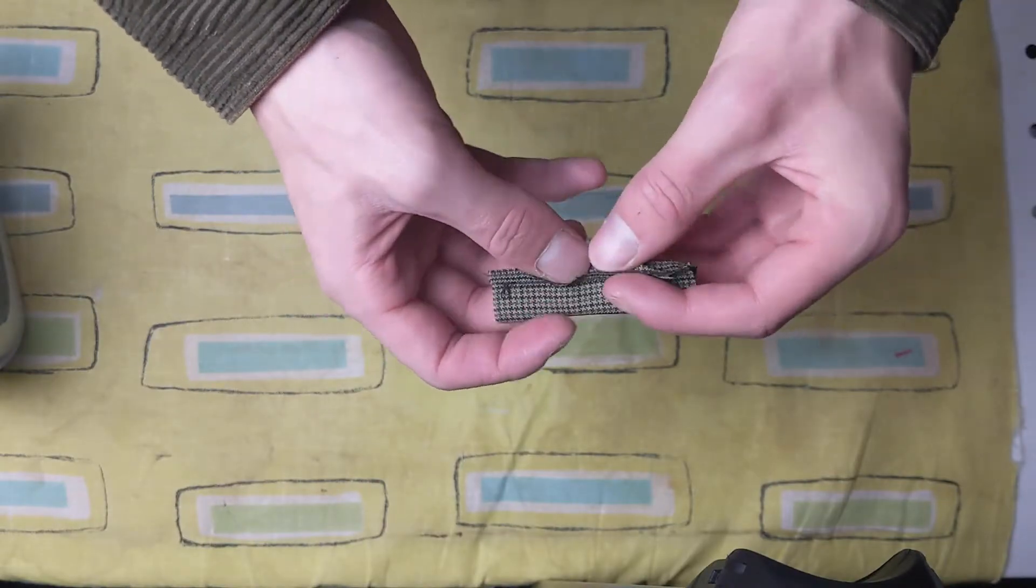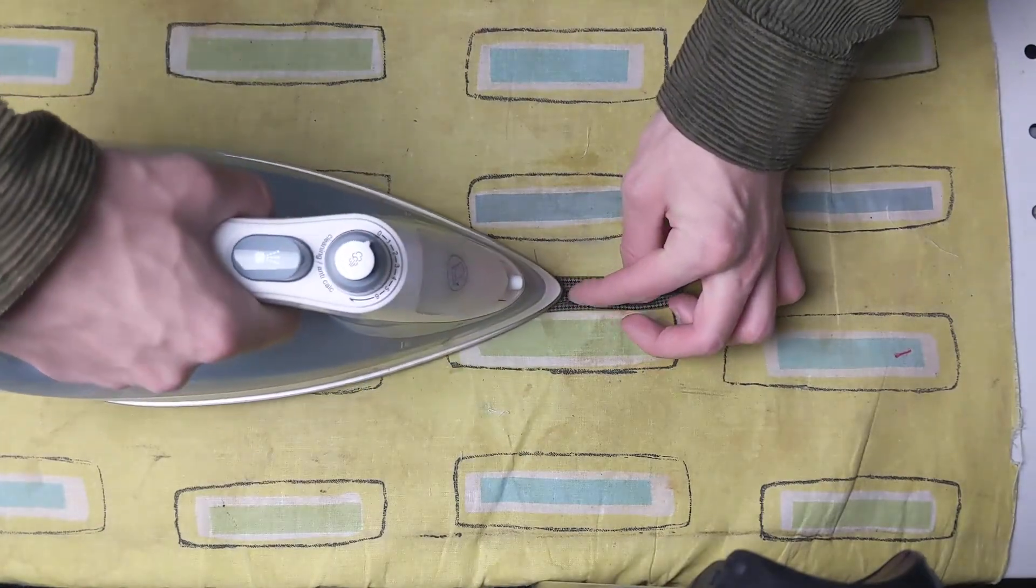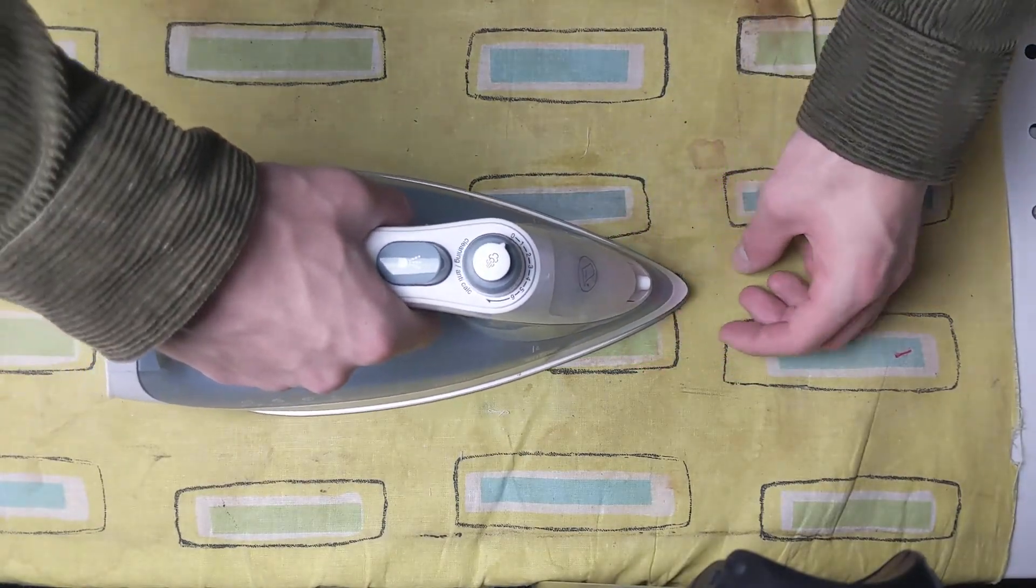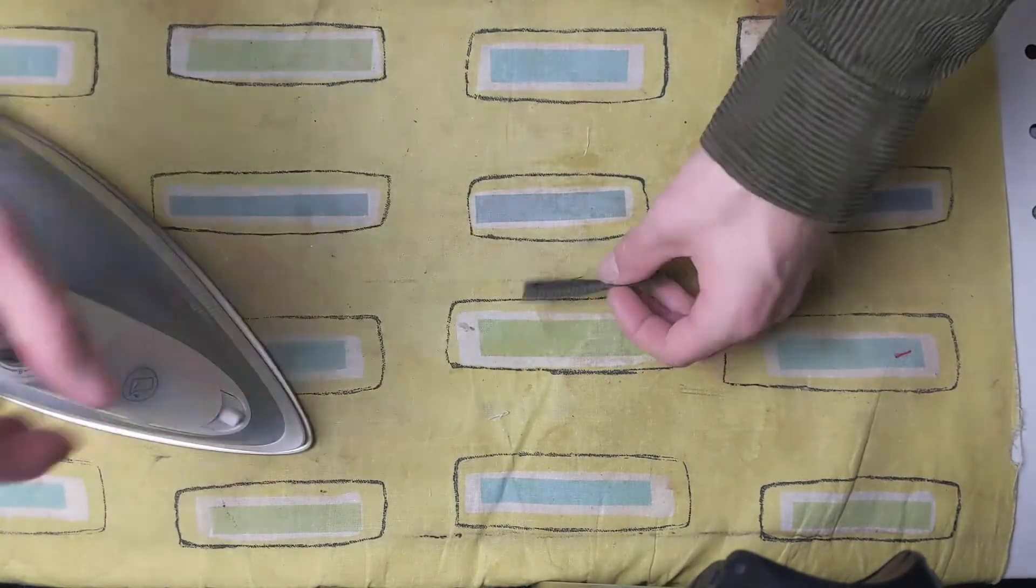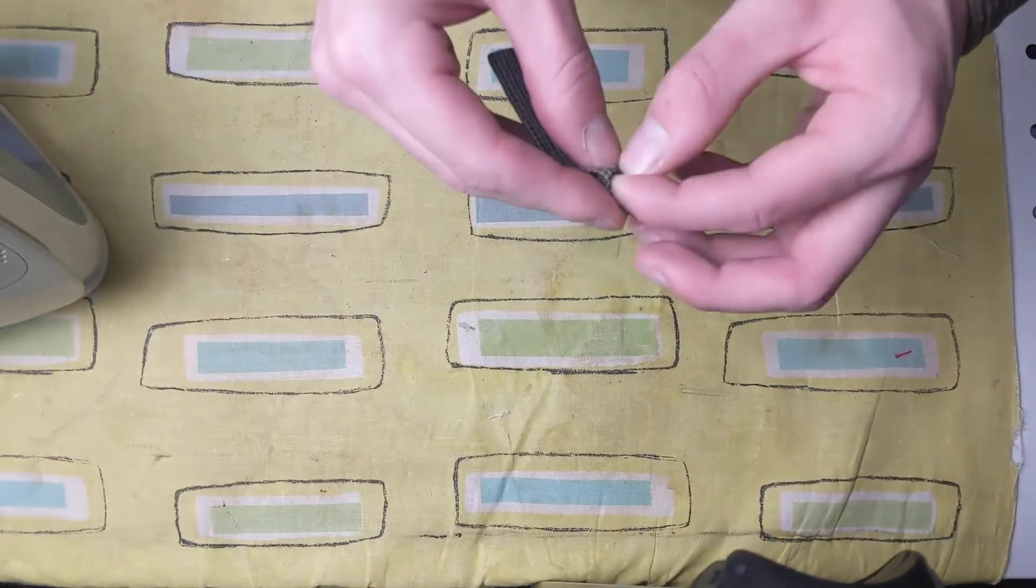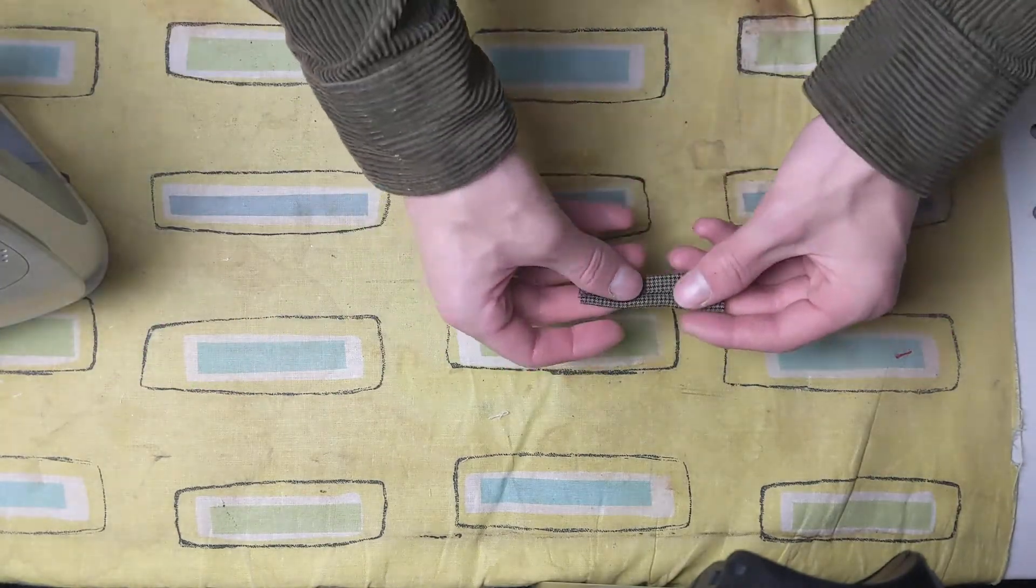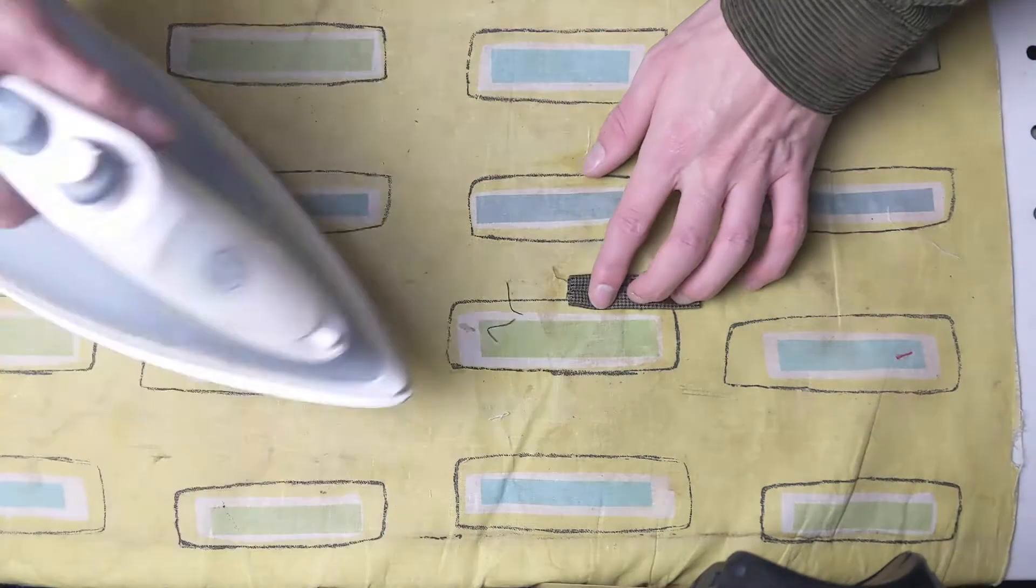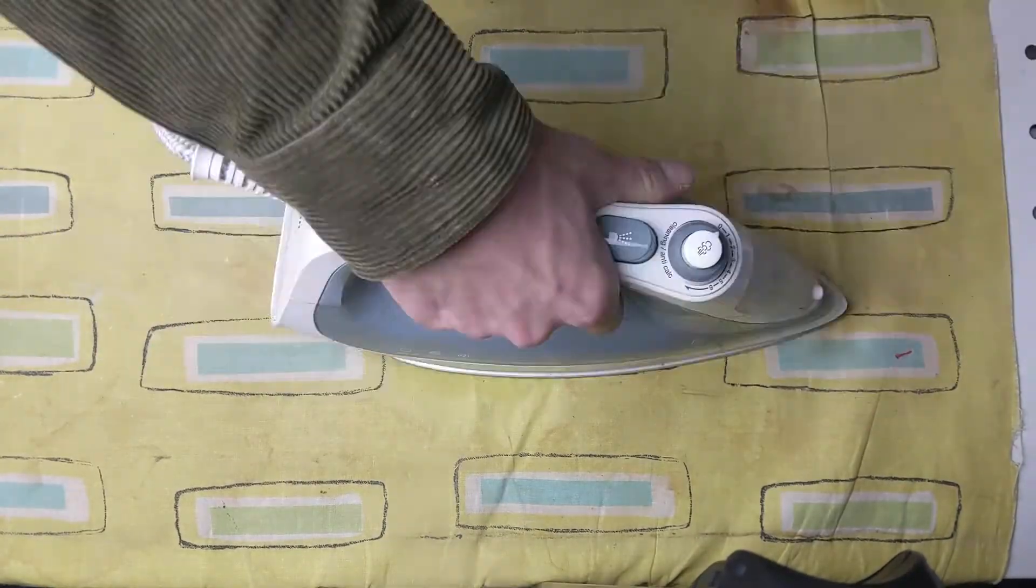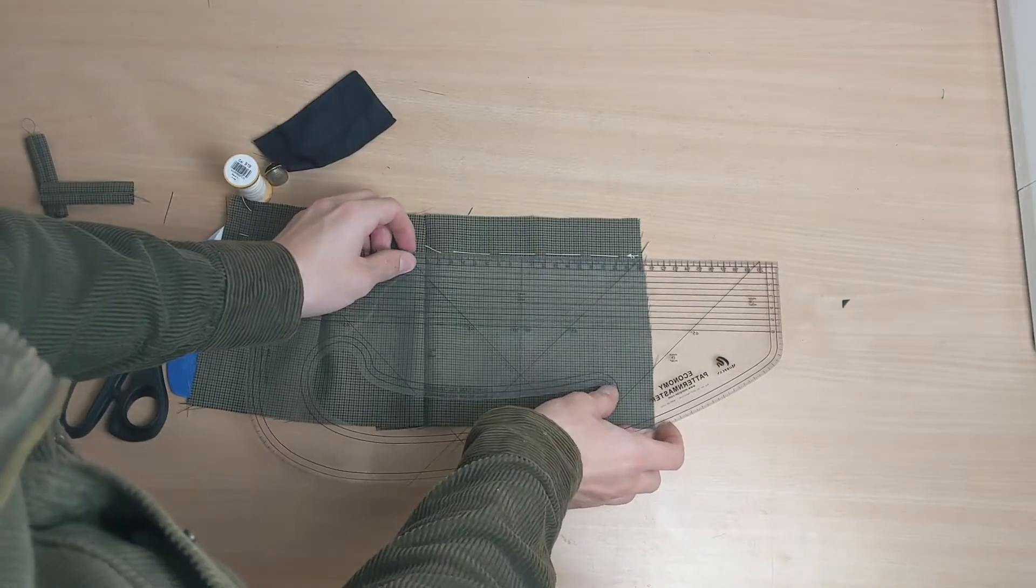Fold them in half and sew them together with a half centimeter seam allowance, making them easier to flip inside out than a whole centimeter would. Before you do that though, iron the seam open gently so that when you flip it inside out the seam will be open and not bulking up one side. Then be sure to give it some welly to get it flat.